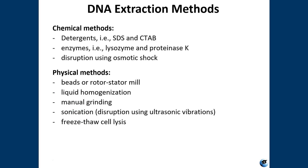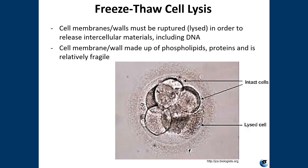Several different methods are commonly used to extract DNA from specimens. Chemical methods include detergents like SDS and CTAB, and enzymes like lysozyme and protease K. You can also use osmotic shock. Physical methods include using beads, liquid homogenization, grinding, and sonication. We're going to use freestyle cell lysis, in which cell membranes are ruptured to release their DNA. We can use freestyle cell lysis on bacteria because their cell walls are relatively fragile and easy to lyse — it's kind of like popping a bubble. Once you lyse the cell membrane, it spits everything out, and then you just have to get the DNA and separate it from all the other contents.